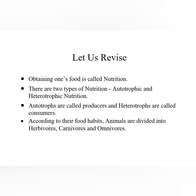Obtaining one's food is called nutrition. There are two types of nutrition: autotrophic and heterotrophic. Autotrophic organisms are called producers, and heterotrophic organisms are called consumers. Then, regarding food habits of animals — according to their food habits, animals are divided into herbivores, carnivores, and omnivores.